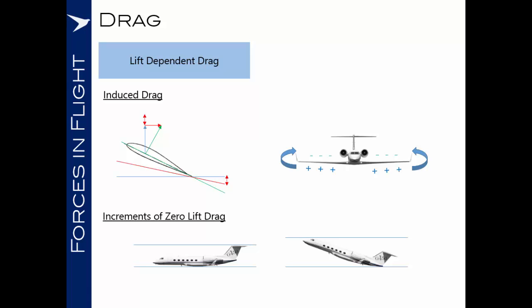What we can see from these two components of the lift dependent drag is that as we are producing more lift we will actually be increasing the amount of drag. If we take the same graph that we drew for zero lift drag and plot the coefficient of drag, the amount of drag versus the airspeed, we'll actually see that as we increase our airspeed so we can reduce our angle of attack and therefore the drag caused by lift is decreasing.